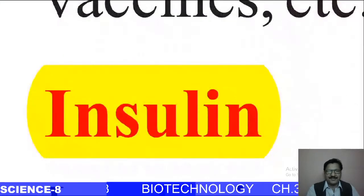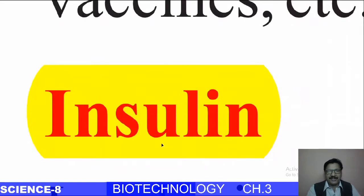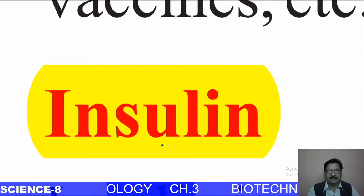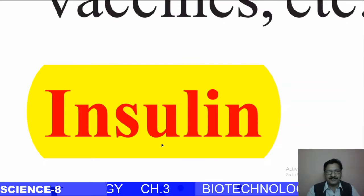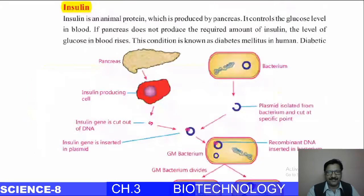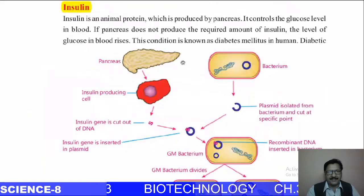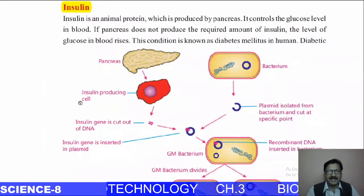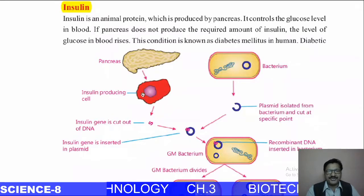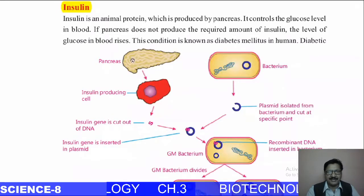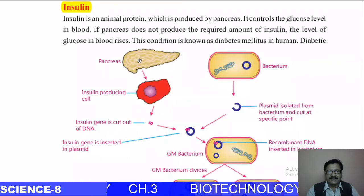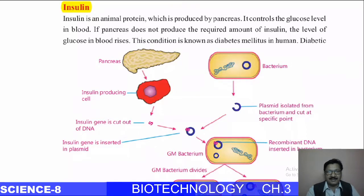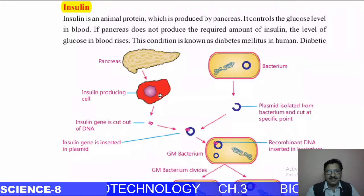Welcome back students. Today we are going to check how insulin is prepared by scientists in the laboratory using different techniques. The pancreas produces insulin in our body. A cell is taken from the pancreas, and from its nucleus — the hereditary material — a gene is cut out.